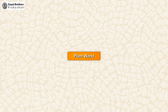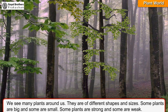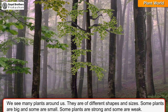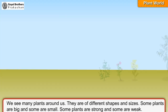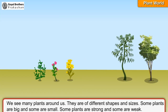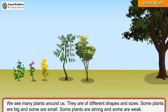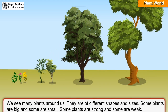Plant World. We see many plants around us. They are of different shapes and sizes. Some plants are big and some are small. Some plants are strong and some are weak.